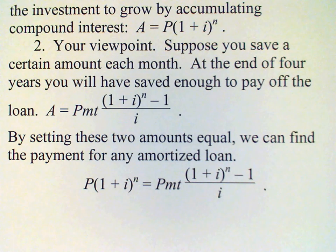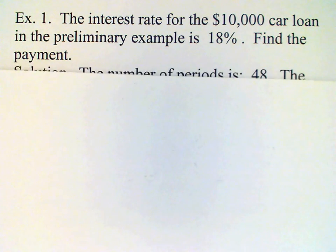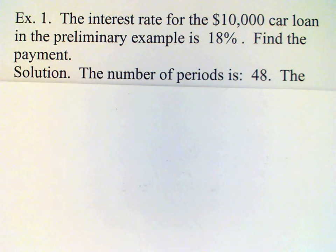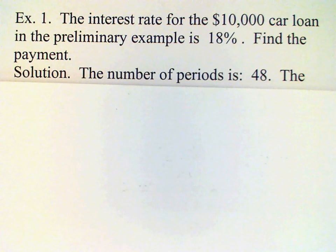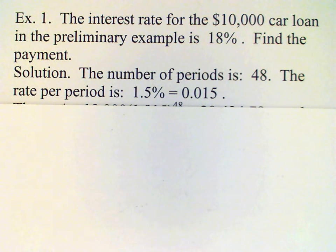Let's continue with this example. The interest rate on this auto loan is going to be eighteen percent, which is the rate that auto loans are sometimes pegged at. What we want to do is find the payment. The loan is for four years, so we have twelve months times four, which is forty-eight months. To get the interest rate per period, we take the annual rate of eighteen percent and divide by twelve to get one and a half percent, or 0.015.